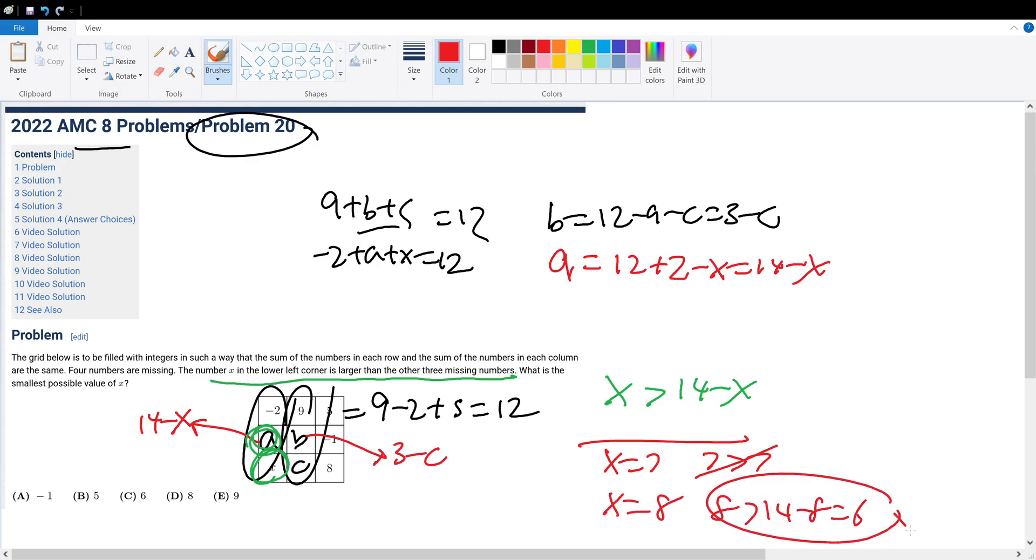Now the question also states we have to find the smallest possible value of X that satisfies this condition. So that's 8. Answer choice D.